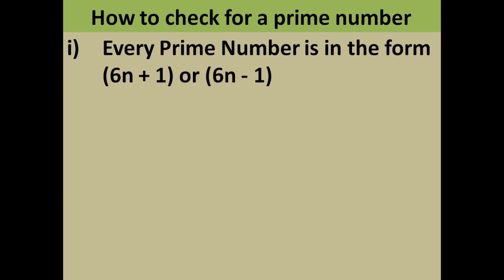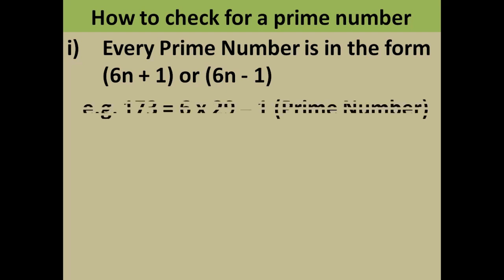For example, if you take 173 — 173 is actually a prime number — and it follows this property: it is equal to 6 into 29 minus 1. That is, 6 into 29 is 174, and then minus 1 is 173.